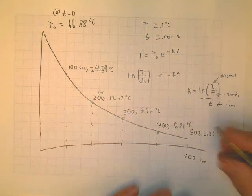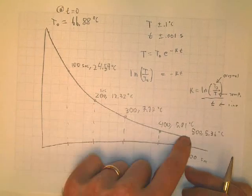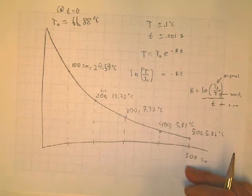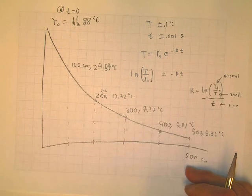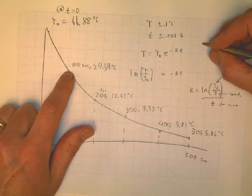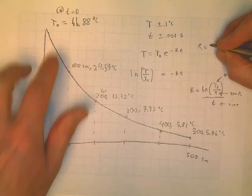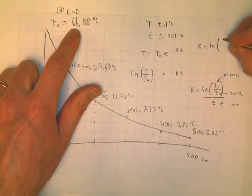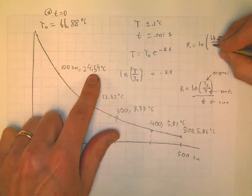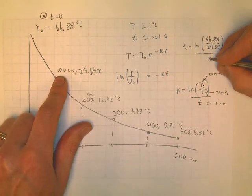Let me calculate K here for this first point here, the 100 seconds. K is equal to, well, the original temperature, and it will always be this. So it's LN. The original temperature is 66.88, divided by the temperature at that time, 24.54, divided by the time, which is 100 seconds. And these are going to change. This will stay the same as you calculate your Ks. If I calculate that, let me do that now. If I'm so clever and I put that in my calculator, I'm getting that K, at least for that first point, is .0100.